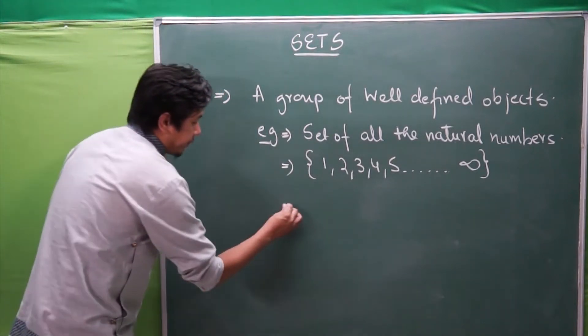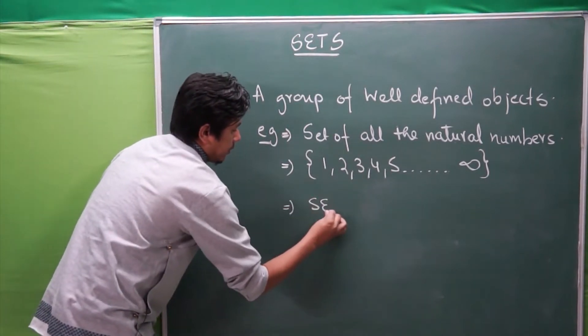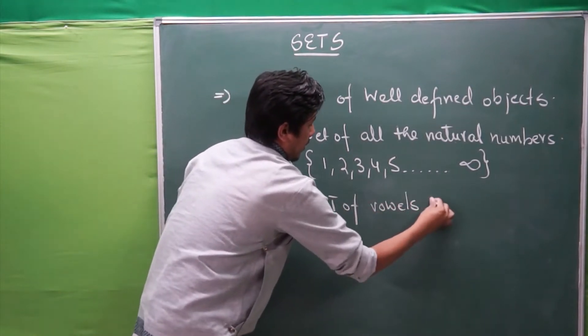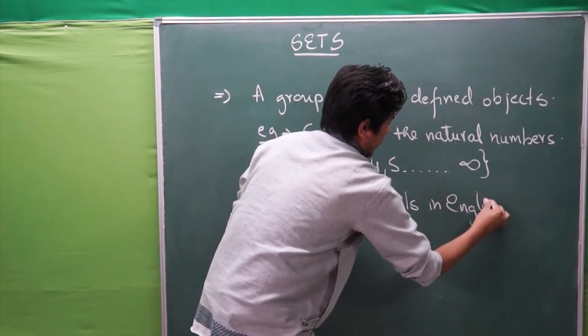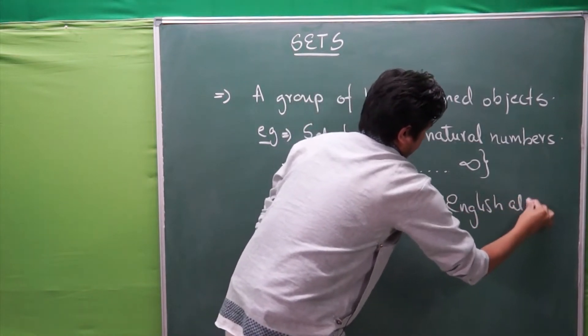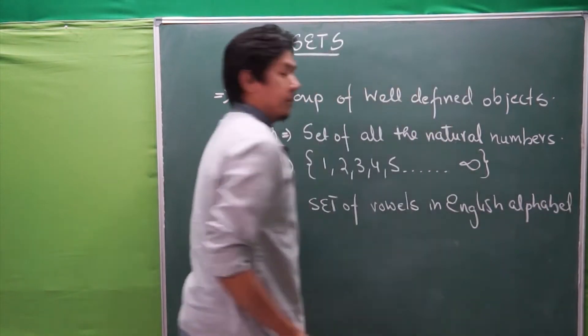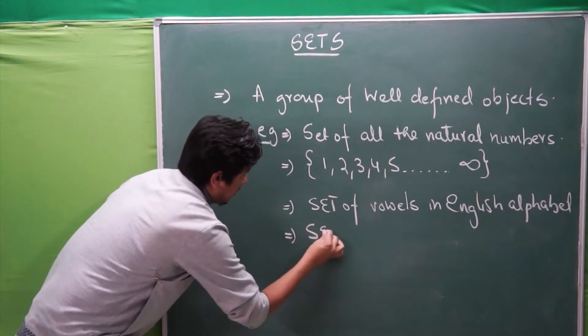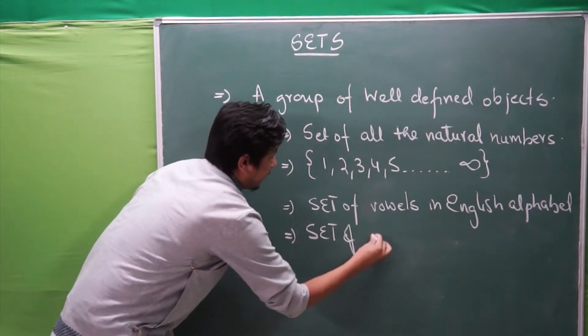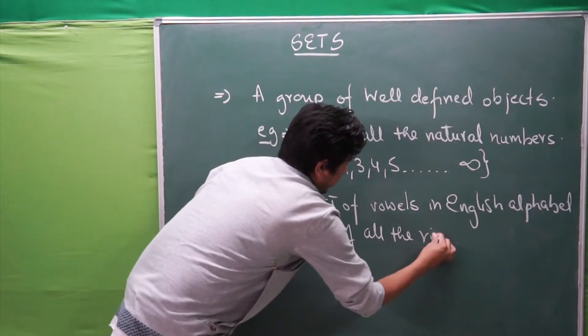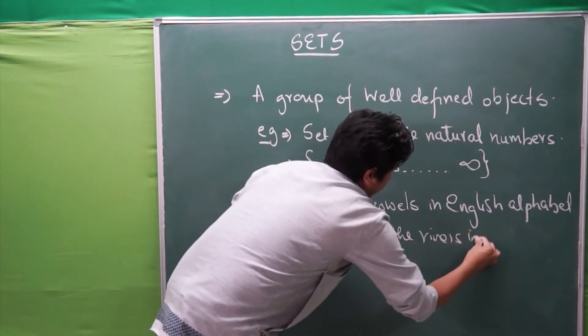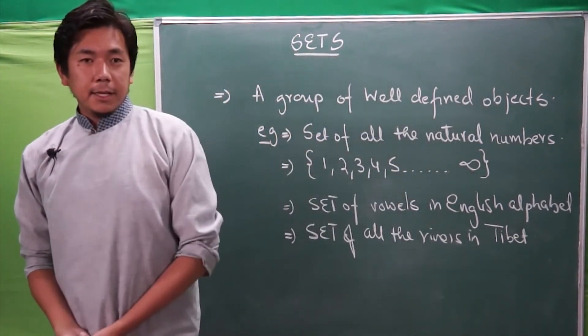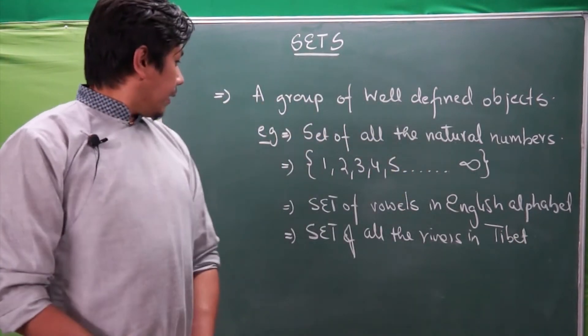For example, a set of vowels in English alphabet—everybody knows it—A, E, I, O, U. Similarly, we can have set of all the rivers in our great nation Tibet, certain examples of sets in our daily lives.